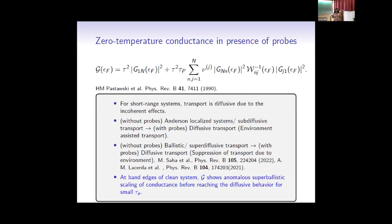For short-range systems, for any weak value of incoherent effects, the transport is eventually diffusive. In the absence of probes, if transport is localized, no-transport, or subdiffusive — slower than diffusive — then in the presence of probes it becomes diffusive. This is known as environment-assisted transport. Conversely, without probes, if transport is faster than diffusive — like ballistic or superdiffusive — then in the presence of probes it eventually becomes diffusive; the environment suppresses transport in these cases. We are interested in the conductance behavior in the presence of weak incoherent effects at the band edges of the clean system.